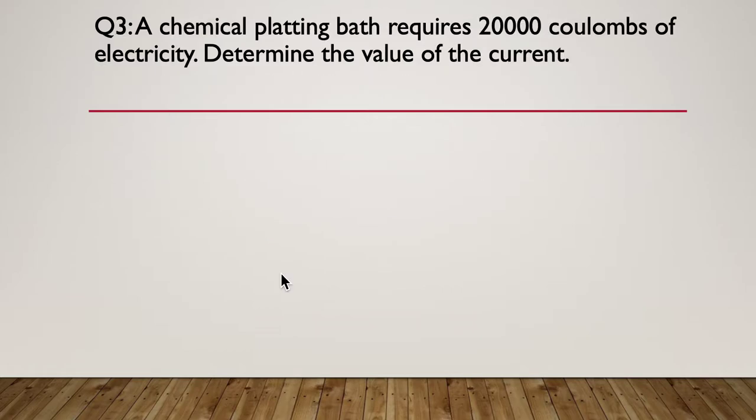Question three: A chemical plating bath requires 20,000 coulombs of electricity. Determine the value of the current. So pause here and have a go at this one.